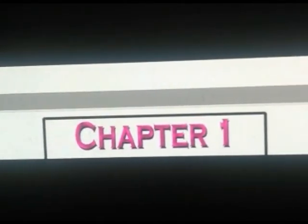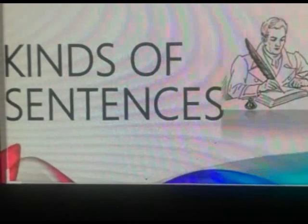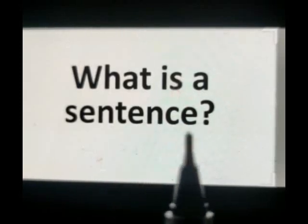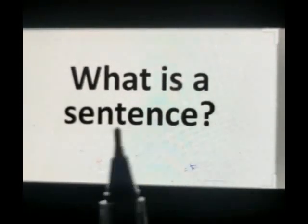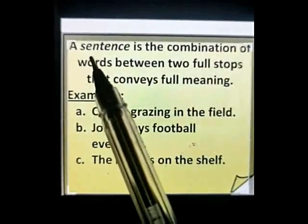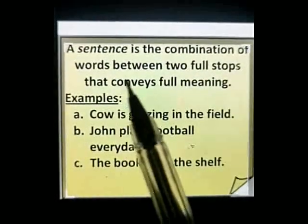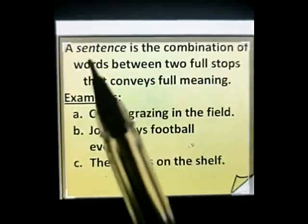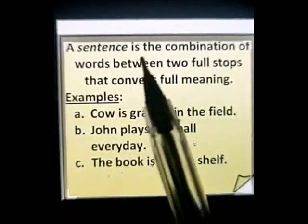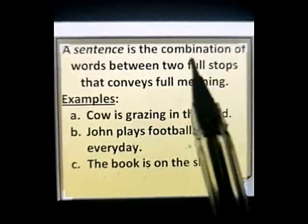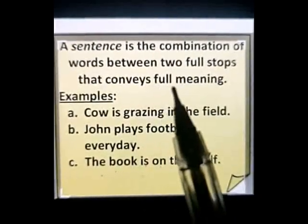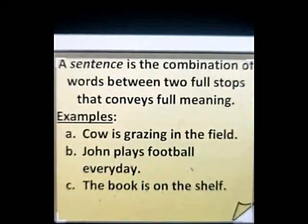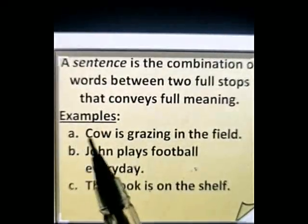Good morning students. Today we will start with chapter number one: kinds of sentences. Before starting kinds of sentences, we will first understand what a sentence is. A sentence is a combination of words between two full stops that conveys a full meaning. In simple words, a sentence is a group or set of words which gives a complete and full meaning, or a sensible meaning.